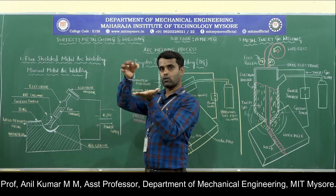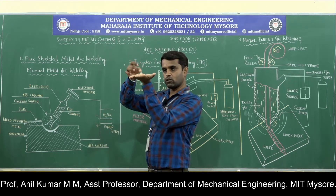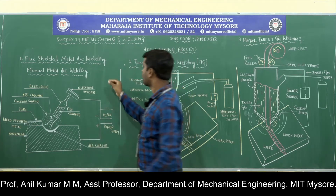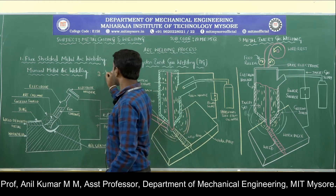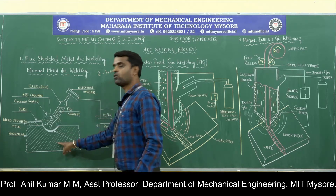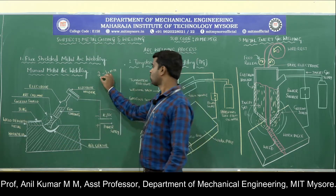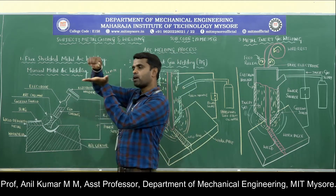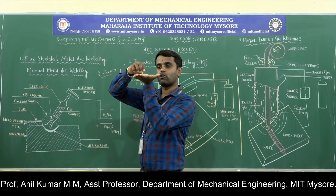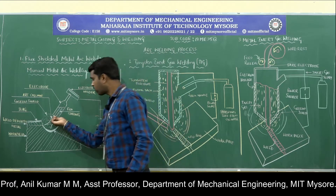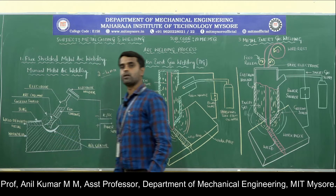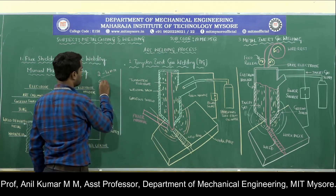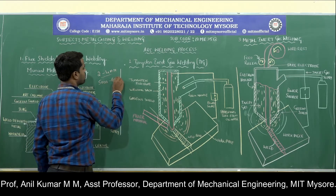Initially, a suitable AC or DC power is supplied through the electrode and the workpiece material. You bring the electrode close to the workpiece surface, touch it, and separate it by a small gap of around 2 to 4 mm. You must maintain a gap of around 2 to 4 mm between the electrode and the workpiece material. When you separate the electrode, the electric arc is struck between the gap of the electrode and the workpiece material. This arc has a temperature of around 5000 to 6000 degrees centigrade.